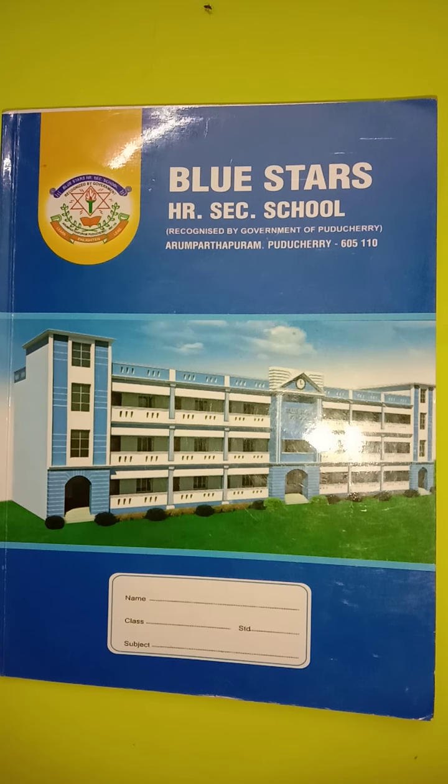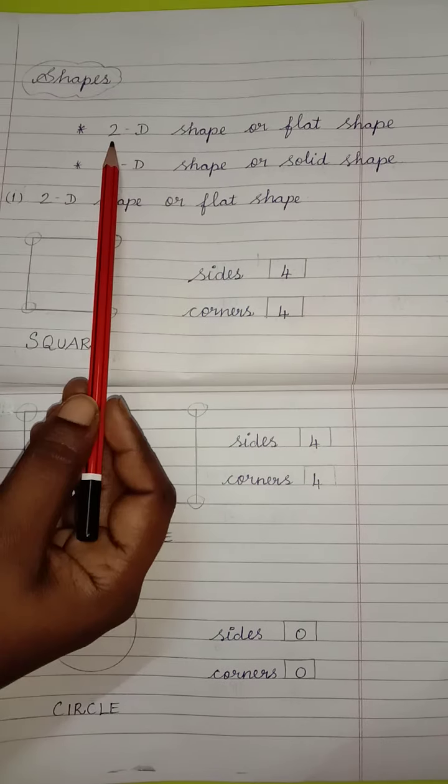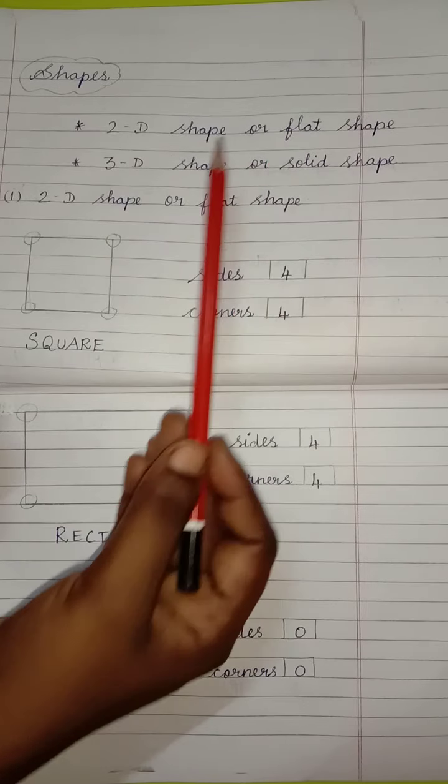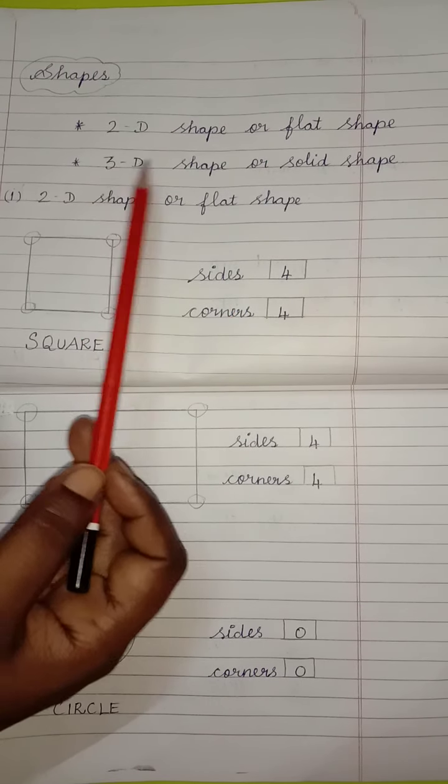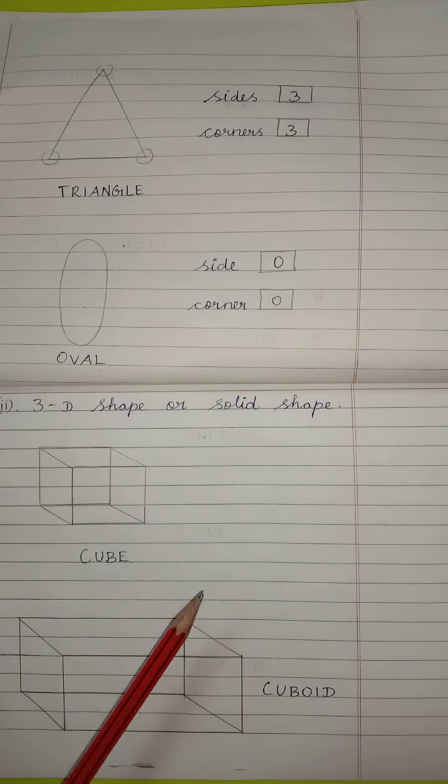Okay children, everyone ready with your Math Class One Notebook 192 pages. Children, we have completed 2D shape or flat shape. Today, we are going to see 3D shapes. So, continue here children.